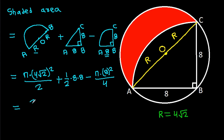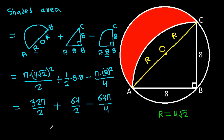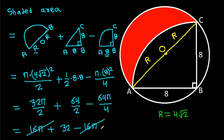This gives us 32 pi over 2, plus 64 over 2, minus 64 pi over 4, which is 16 pi plus 32 minus 16 pi. The 16 pi terms cancel, so the shaded area is 32.